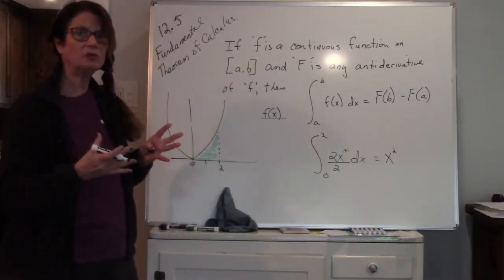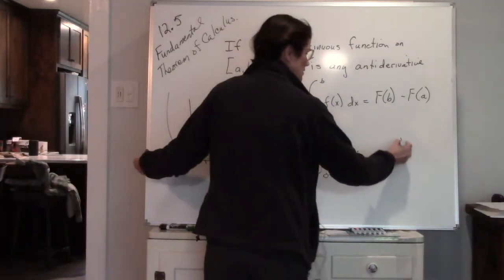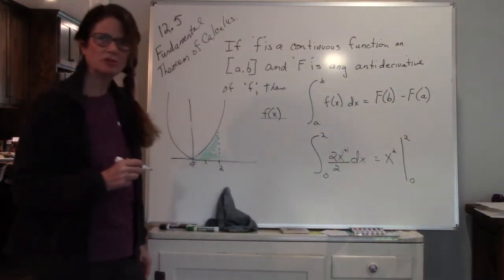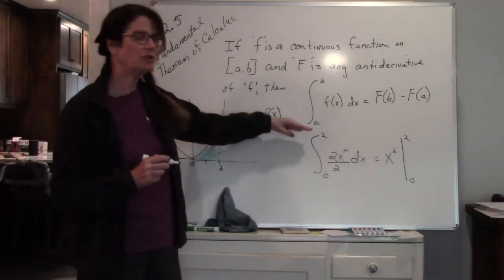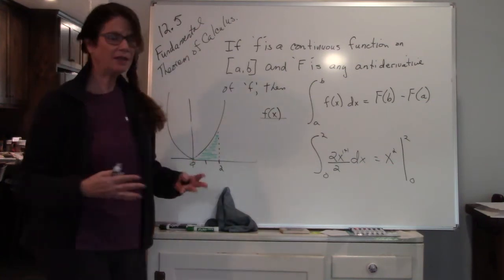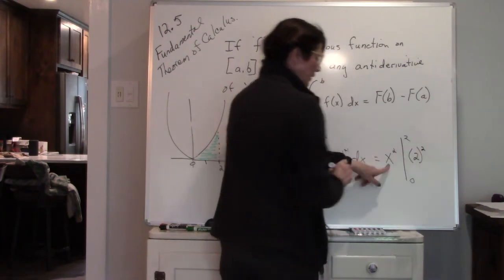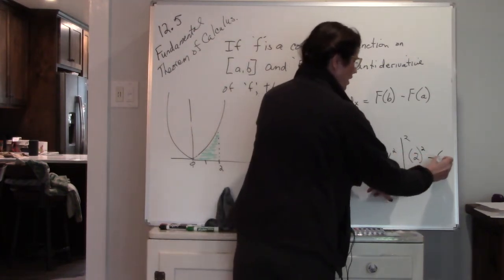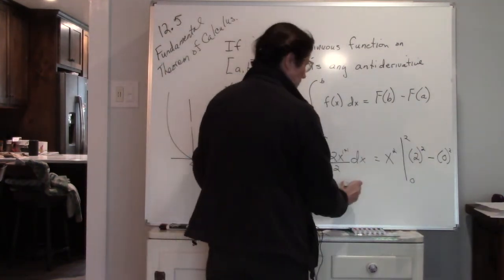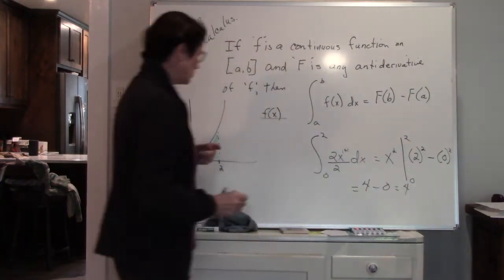Now I'm going to evaluate that between 0 and 2. The notation is: I find my antiderivative, I'm evaluating between 0 and 2. My higher number always goes on top because we're subtracting high to low. And now I'm just plugging in the value. So when x squared — when x is 2, I get 2 squared. And then I'm going to subtract off when x is 0. So 2 squared is 4, and 0 squared is 0. So my answer is 4.